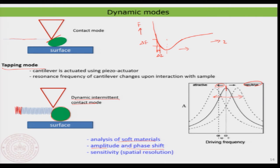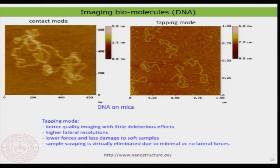Phase shift also has something to do with material contrast — it can resolve material contrast. You can measure these changes in dynamic mode, also known as tapping mode, but more precisely it is a dynamic intermittent contact mode. You do not need to worry about deformation of your sample and can gently work on this mode to nicely analyze surfaces even with soft materials.